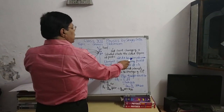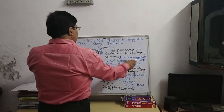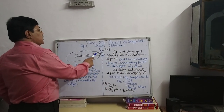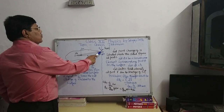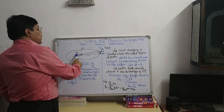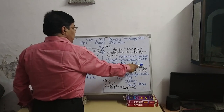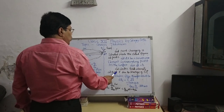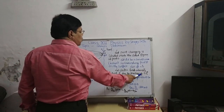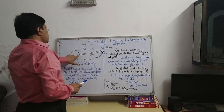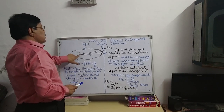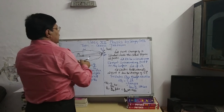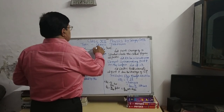Let dA be a small area element surrounding point P on the surface. Let OP equal R. Let the electric field intensity at point P due to charge Q be E. Due to this charge Q, the electric field intensity at point P is E.